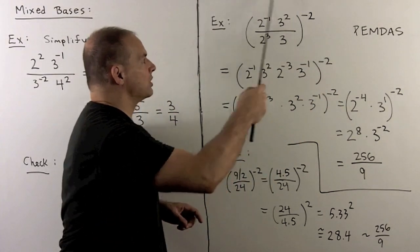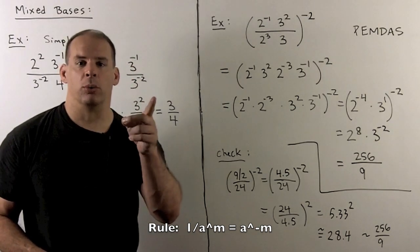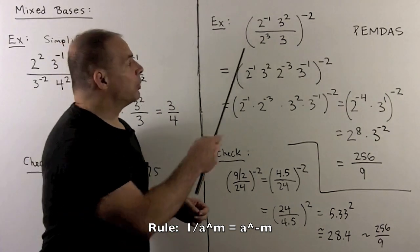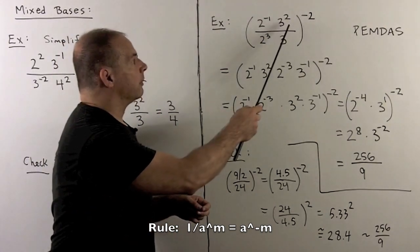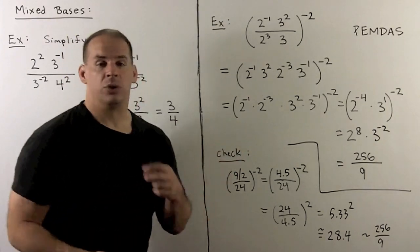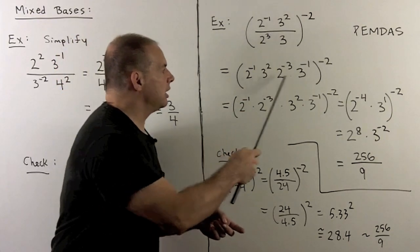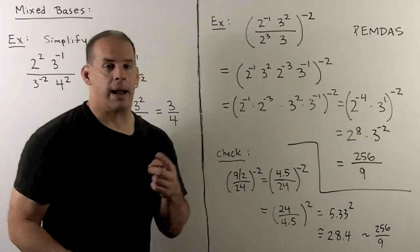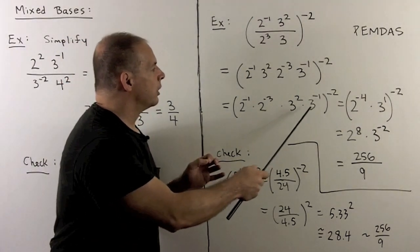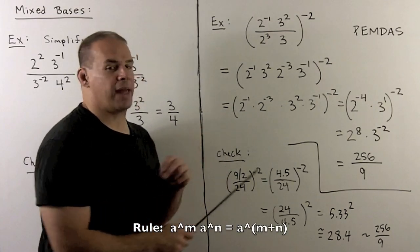First we work with what's in the parentheses. Our rule says if we want to move things between the numerator and denominator, we change the exponent by putting in a minus sign. So I'm going to put everything in the numerator: this two cubed becomes two to the minus three, and this three — which is three to the one — becomes three to the minus one. Now we separate things out, putting the twos together and the threes together, and use our rules.